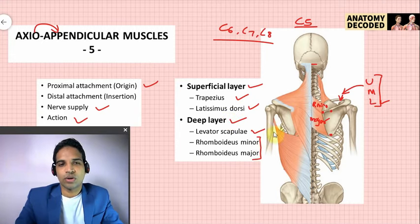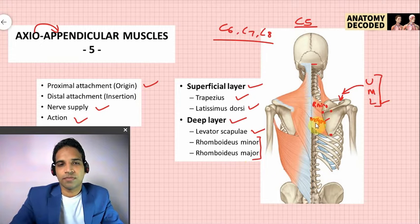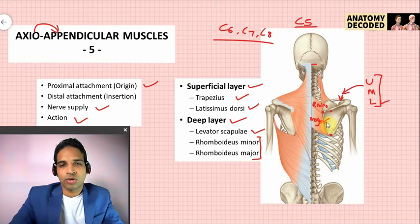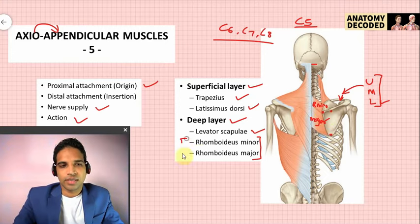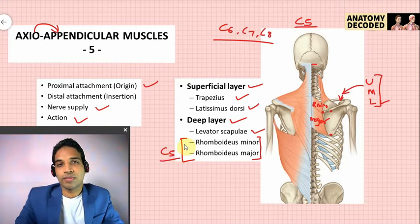Rhomboid minor has proximal attachment from the spinous processes of C7 and T1, and rhomboid major from T2, T3, T4, and T5. Distal attachment: opposite the root of the spine is rhomboid minor, below the root is rhomboid major. Nerve supply is by the dorsal scapular nerve, root value C5, arising directly from the roots of the brachial plexus. Action of both rhomboids is retraction of the scapula.